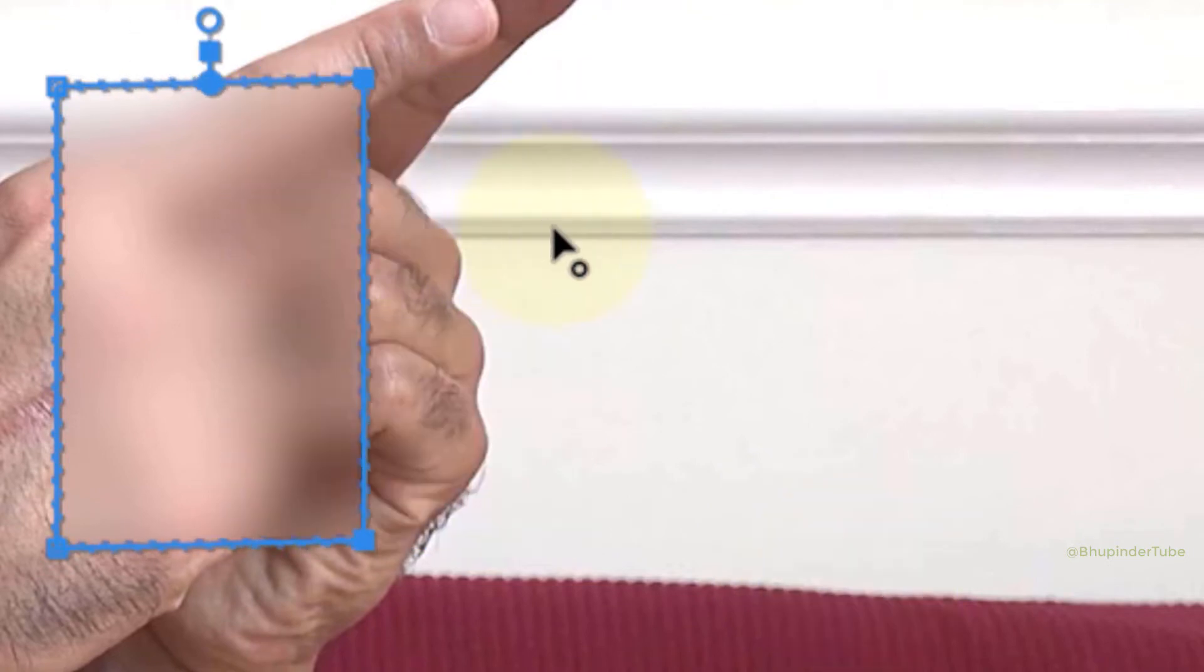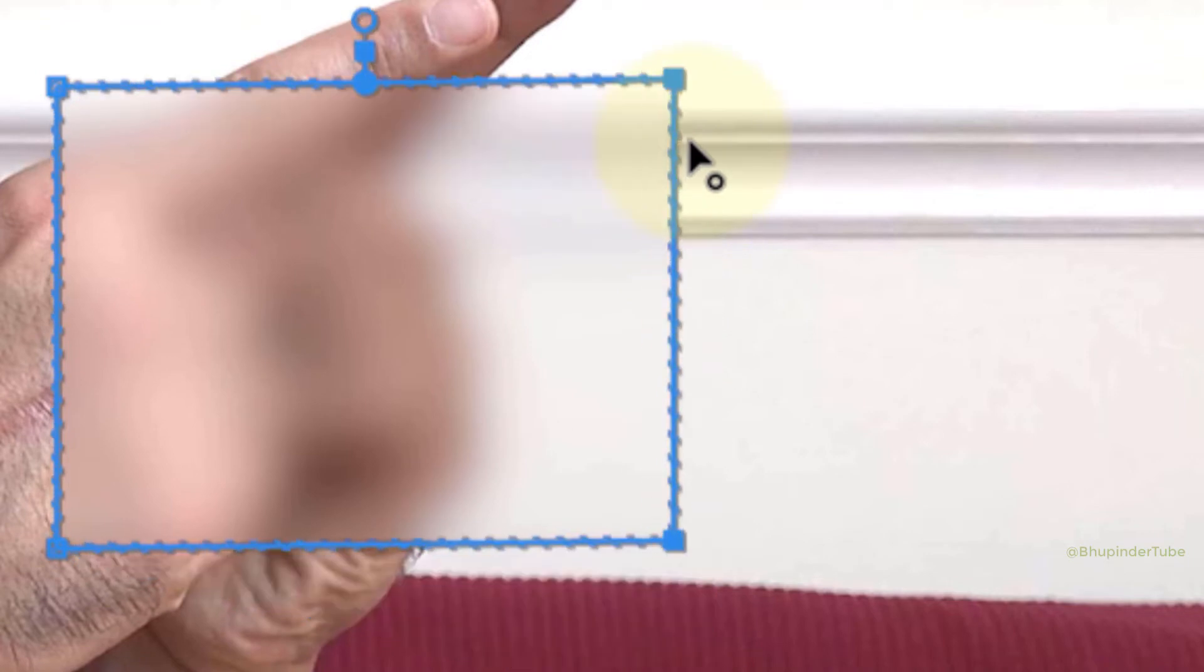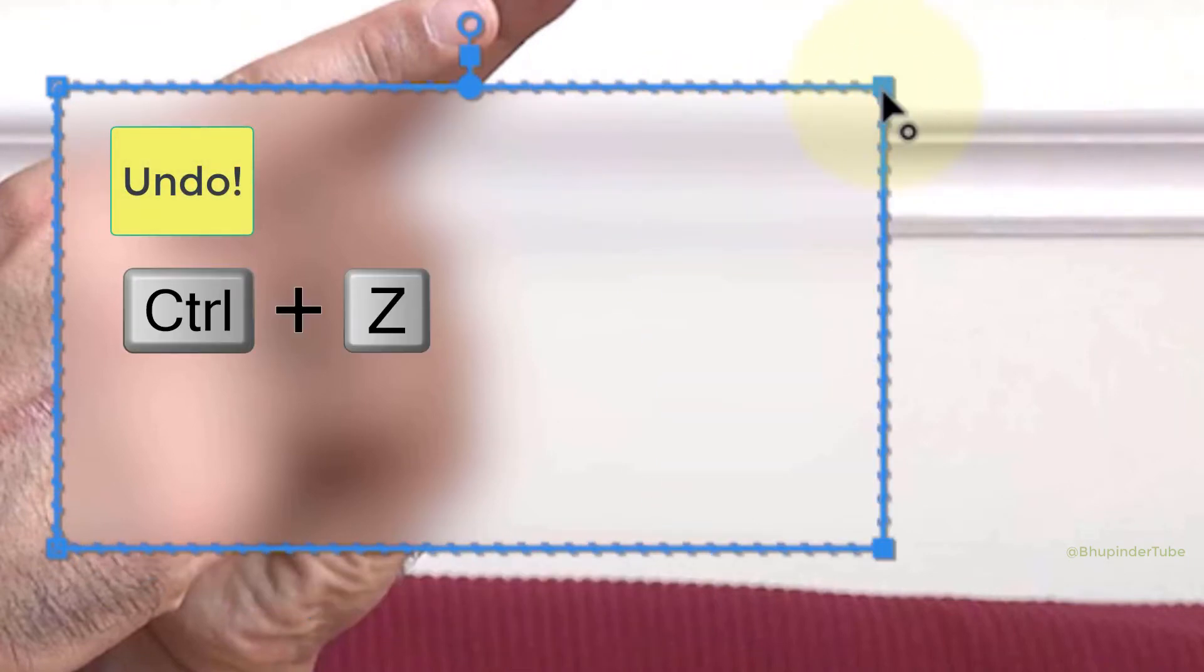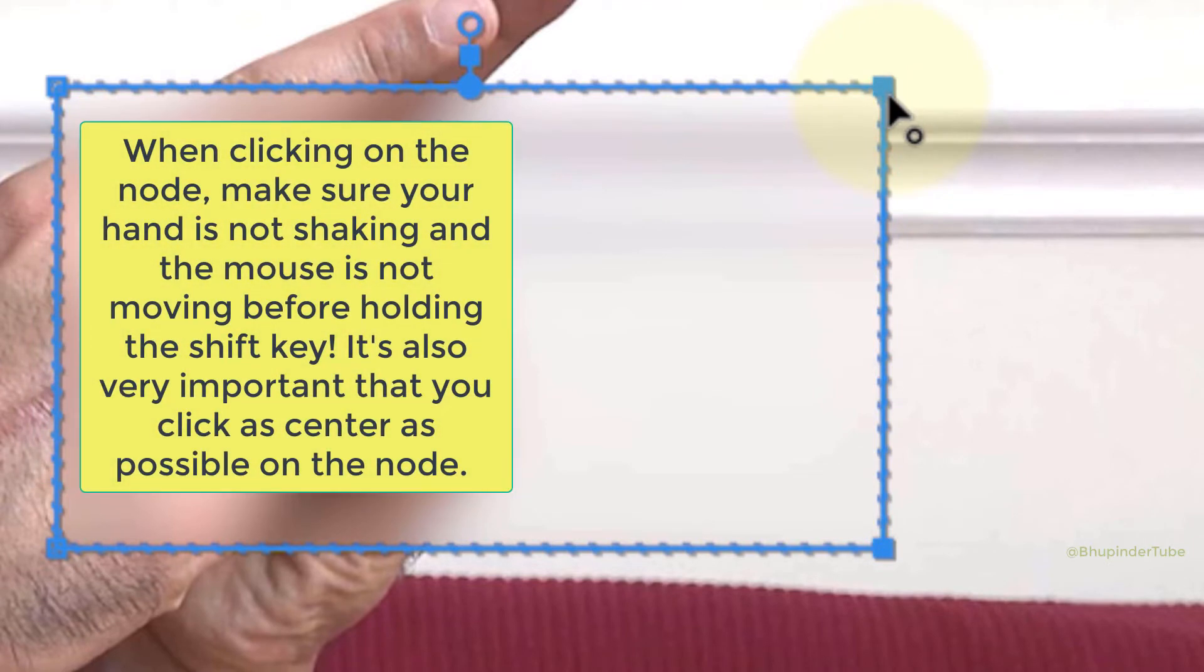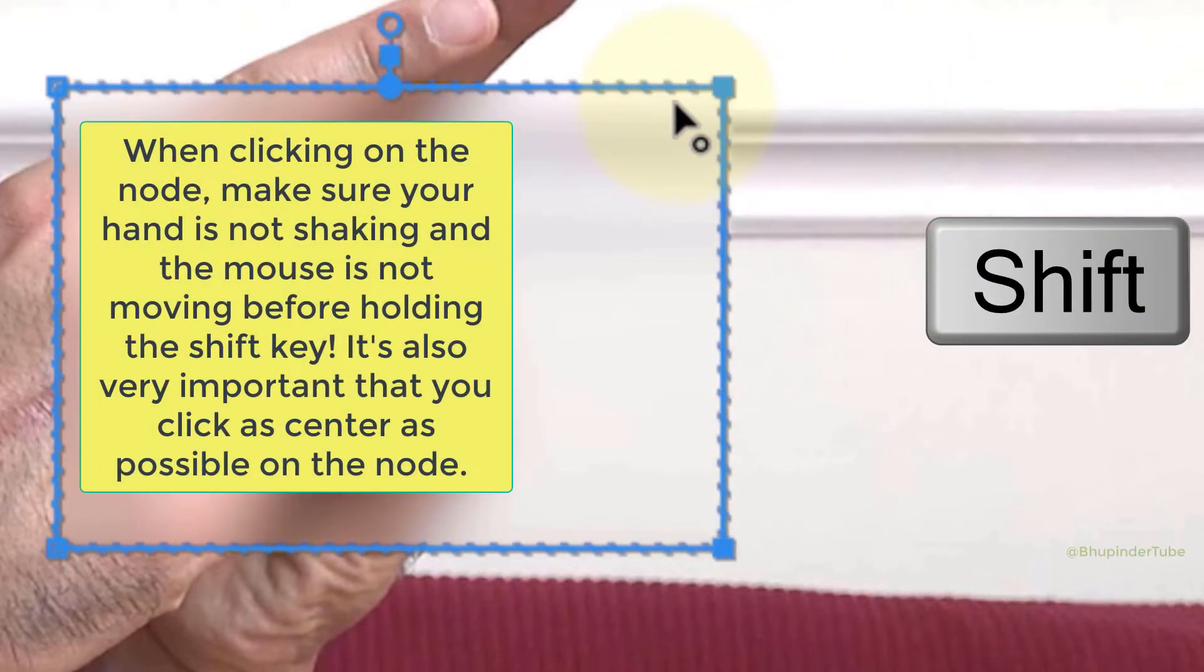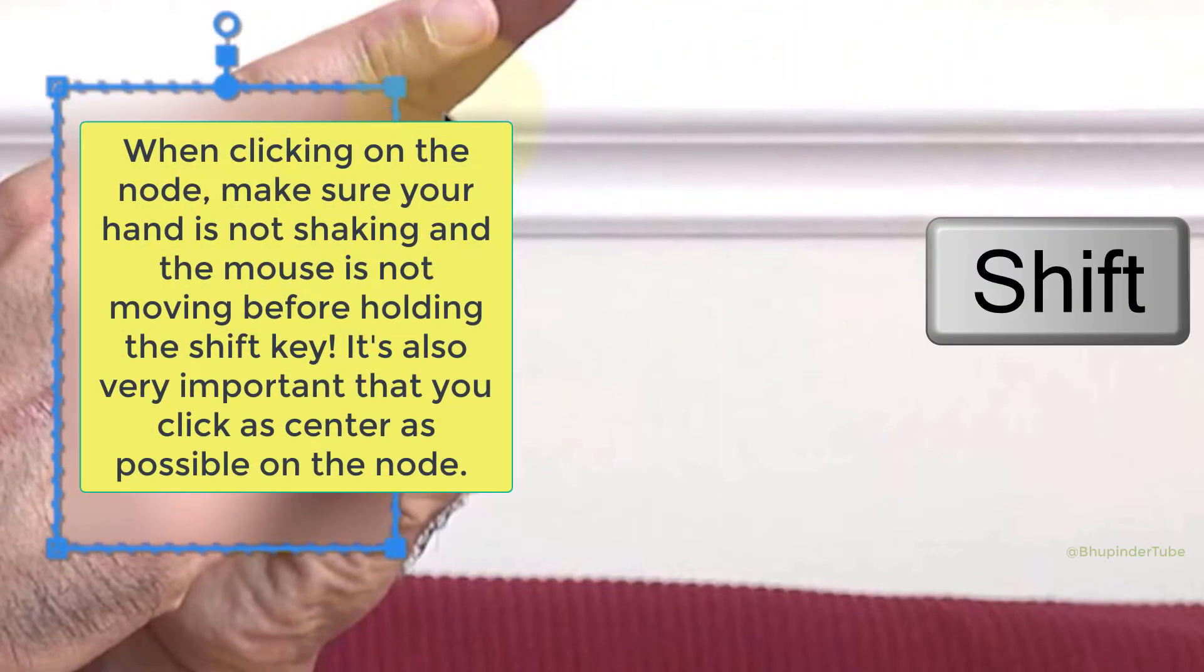When dragging, if you're not able to get a straight square, then undo. This time when you're clicking the top node, make sure the mouse cursor is exactly at the center. Once you click and hold the left mouse button, hold Shift again, then try to drag. Hopefully this time it would be a straight line without any angle.